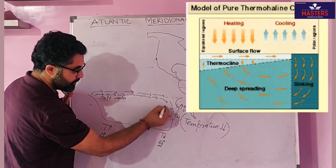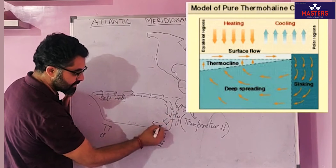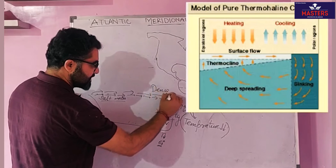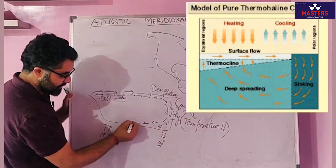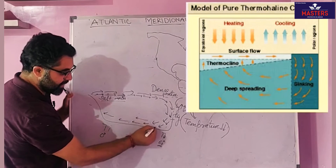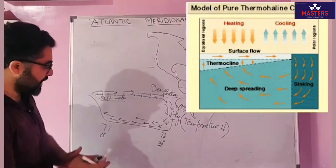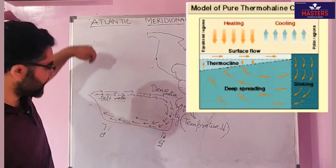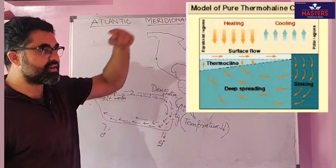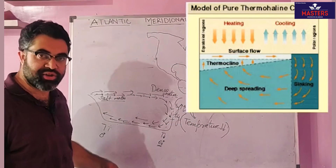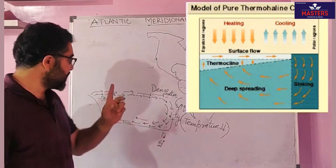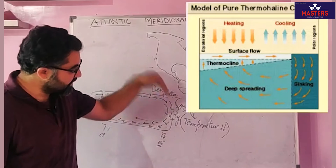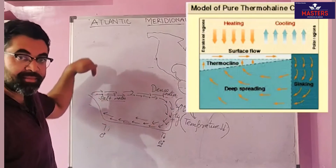Because the water gets denser, it sinks to the lower levels — it can be hundreds or even thousands of meters below the surface. This dense salt water resurfaces somewhere in the lower latitudes. So there is a massive circulation going on beneath the surface in all the oceans, driven by these two factors: decrease in temperature and increase in salinity.